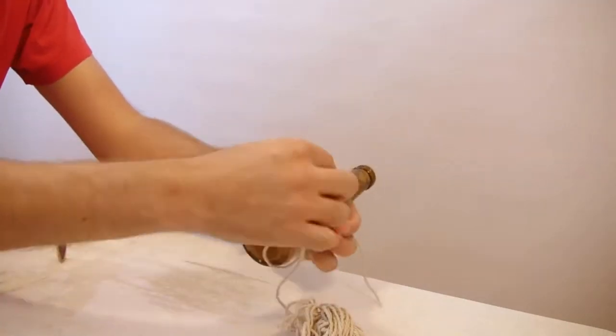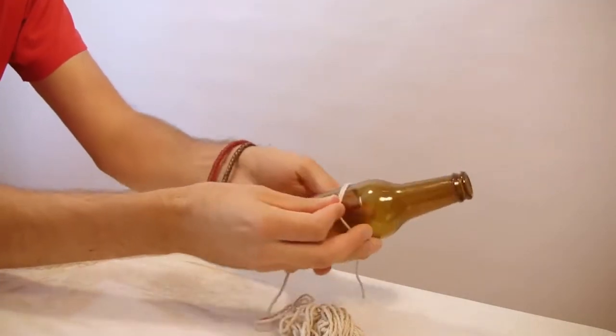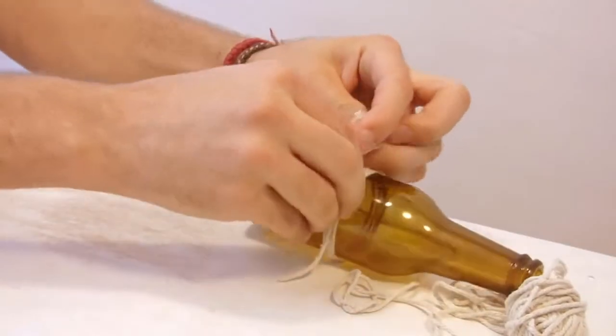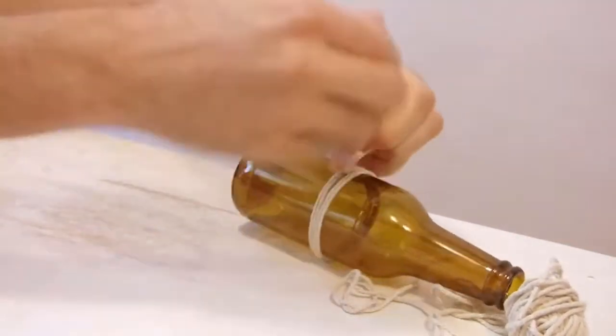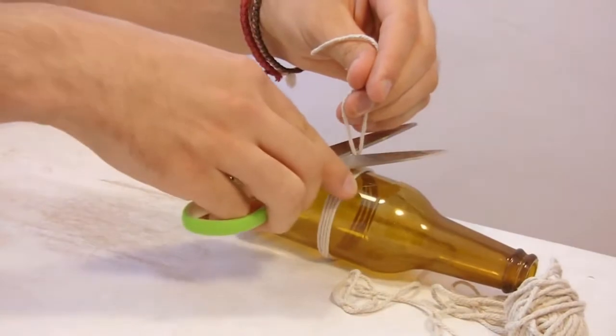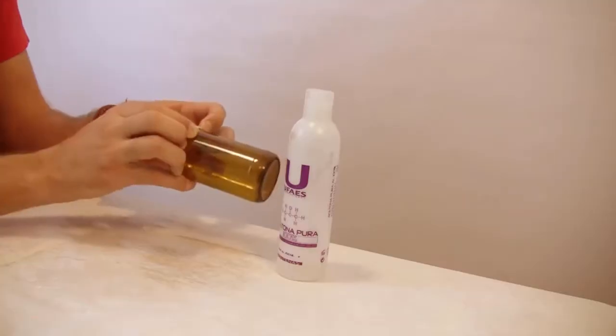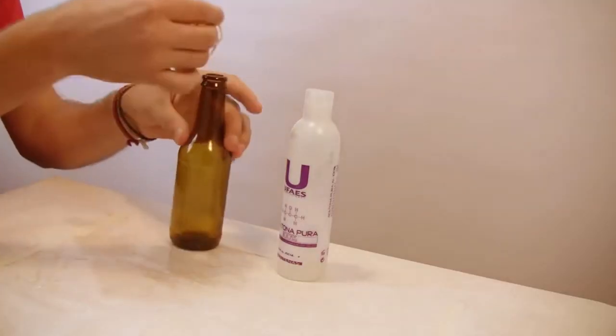Get a string and wrap it around the bottle. Tie it to the bottle and cut off the ends. Take it off and soak it in acetone.